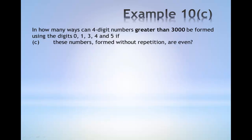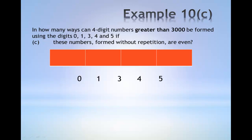Example 10c: In how many ways can 4-digit numbers greater than 3000 be formed using digits 0, 1, 3, 4 and 5 if these numbers formed without repetition are even? Consider the 5 digits and the 4 slots. There are 2 cases to this situation. The first case is to have 0 in the last slot.